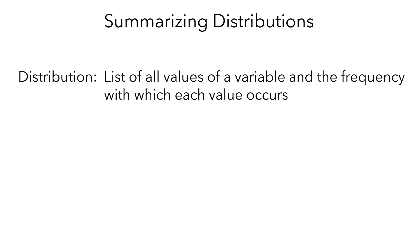It turns out that summarizing distributions is a relatively complicated process. A distribution is a list of all the values of a variable and the frequency with which each value occurs — this is what the graph was showing us. We'll break the process of summarizing data into three parts. In this video, we'll talk about descriptions of shape, and in the next videos, we'll talk about measures of center and spread. So let's take a look at the distribution of mothers' ages again.